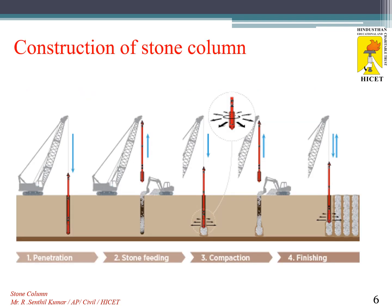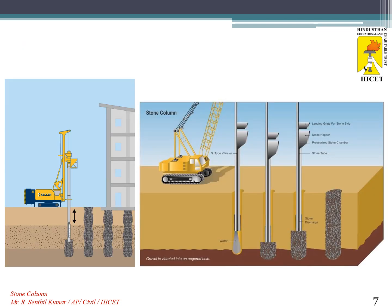This picture shows the construction sequence of a stone column. The first step is penetration, the second is stone feeding into the borehole, the third is compaction using a hammer, and the fourth is finishing the stone column. Another picture also shows how the stone column is constructed below the soil mass, above which any structure can be constructed.